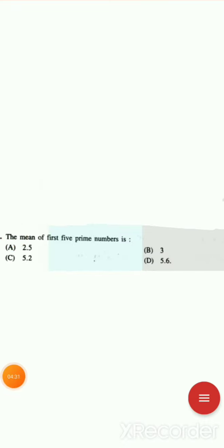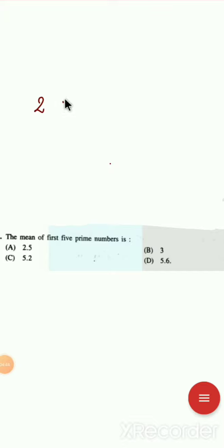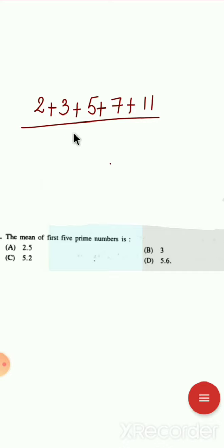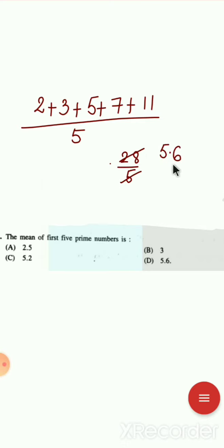Next question: the mean of the first five prime numbers is — options 2.5, 5.2, 3, or 5.6? The first five prime numbers are 2, 3, 5, 7, and 11. To find the mean, add them all and divide by 5. The sum is 2+3+5+7+11 = 28. Divided by 5 gives 5.6. So the answer is 5.6. Mean = sum of observations divided by number of observations.